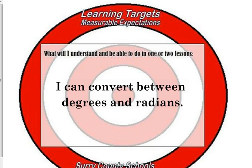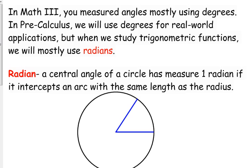We're going to convert between degrees and radians and vice versa. In math 3, when dealing with angles, you measure them using degrees most of the time. In real world situations you use degrees, but when we study trigonometric functions we're mostly going to focus on radians. If you're going on to calculus, it moves exclusively to radians, so it's really more important that you're familiar with radians as opposed to degrees.